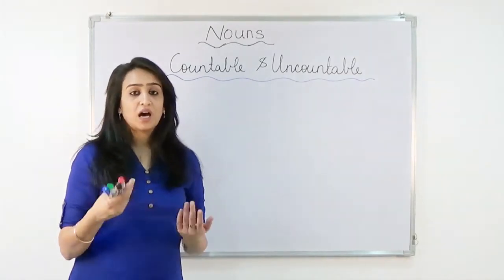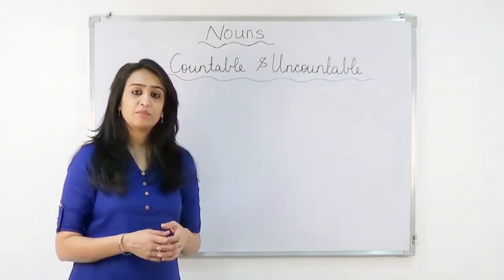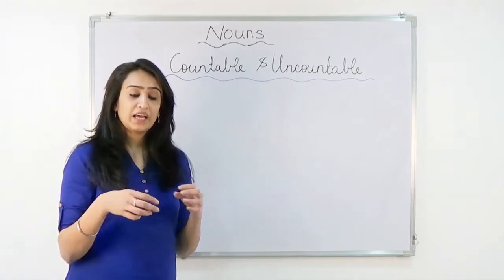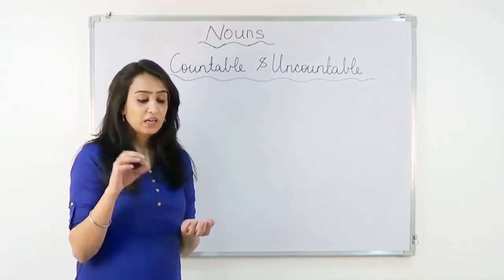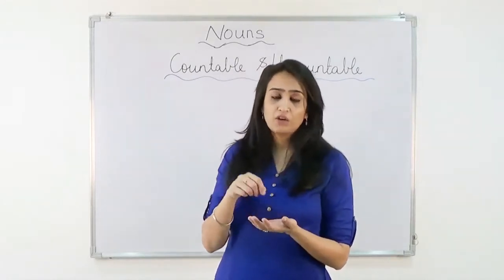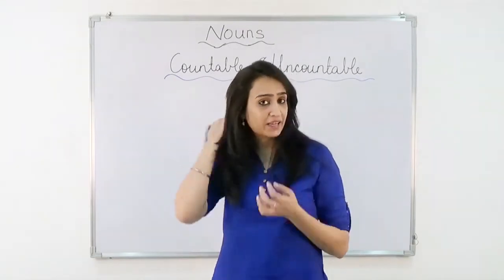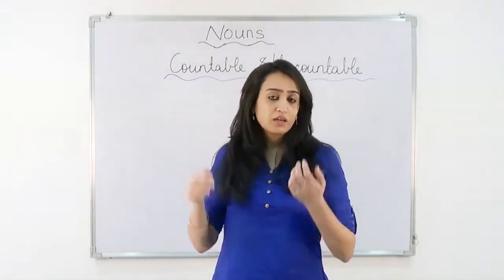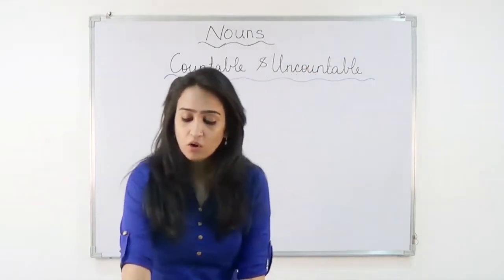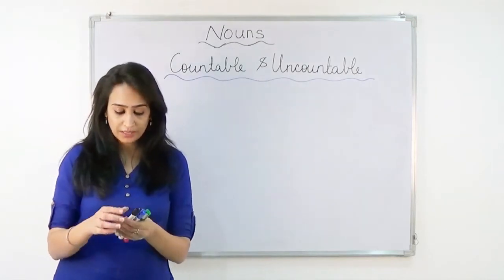But some are very hard to count or they cannot be counted. For example, water — water in an ocean or a river. You can't count how many drops of water there are. So we can't count that. Hair, we can't count hair. Oil — anything liquid we can't count. So these are all examples of uncountable nouns. Very difficult to count them.